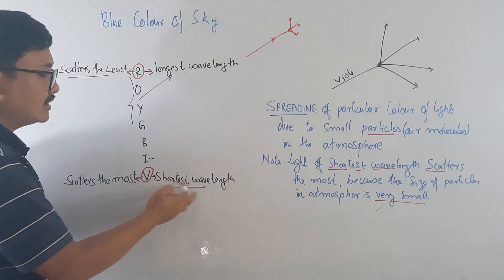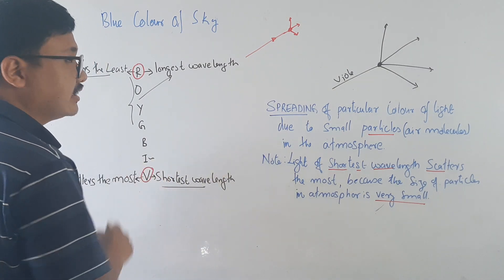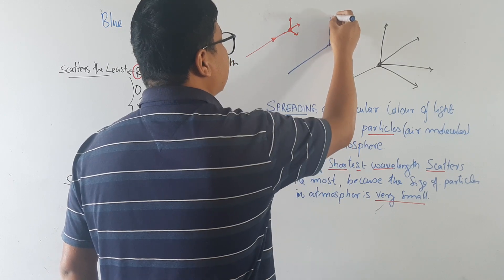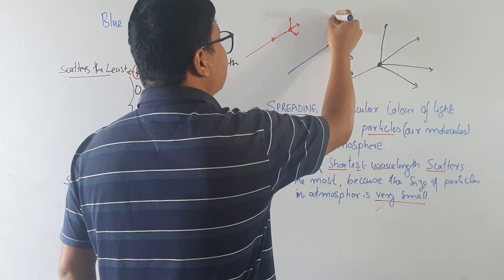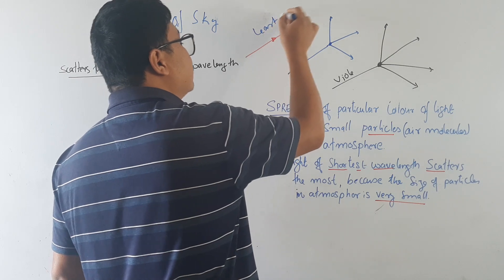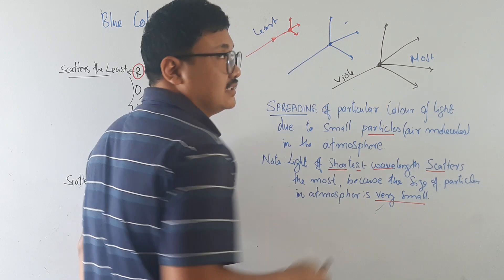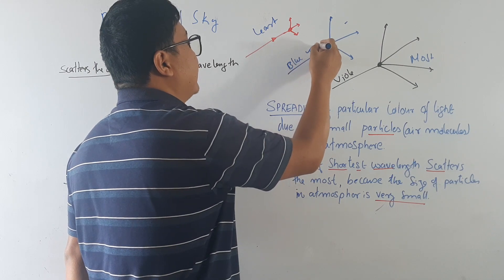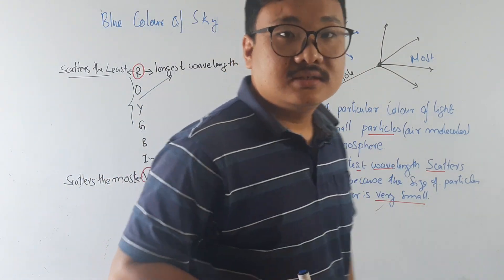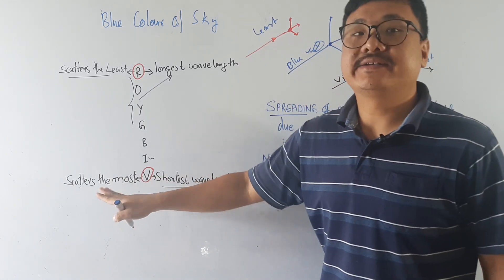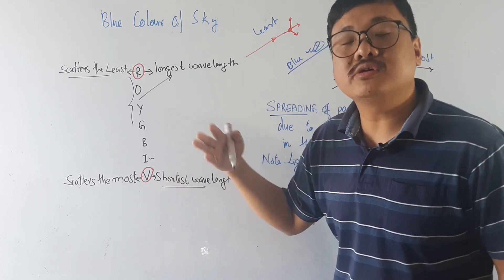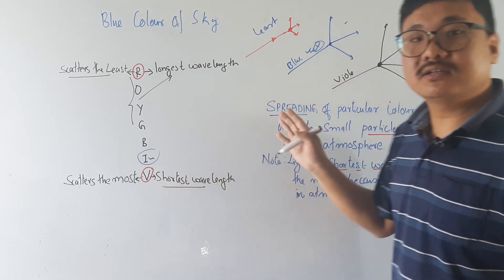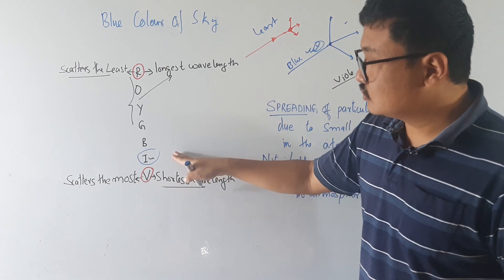Similarly, indigo should also spread the most. But we don't see indigo — rather we see blue. So here is the particle and blue light comes and spreads like this. Violet scatters the most, and blue also scatters quite a lot, but we see blue in the sky. Why not violet? It is clear that violet has the shortest wavelength and scatters the most — we should see violet. If not violet, we should at least see indigo, because indigo also has a very small wavelength and would be scattered the most.